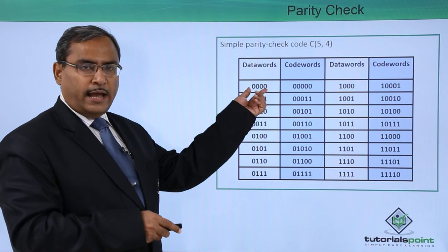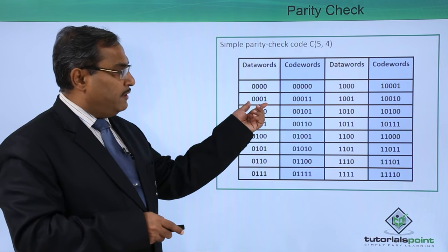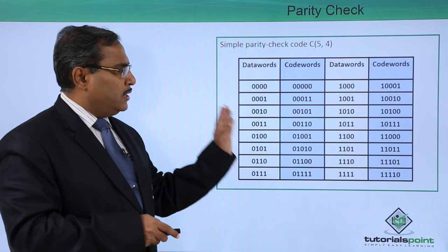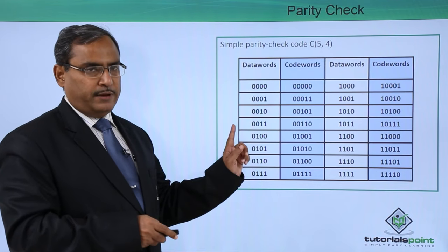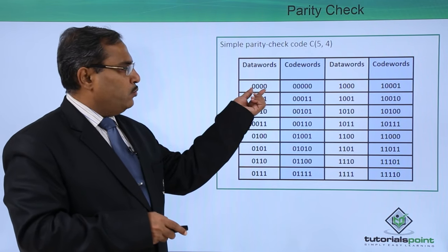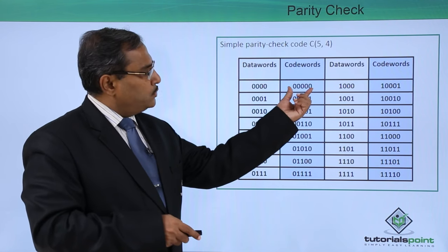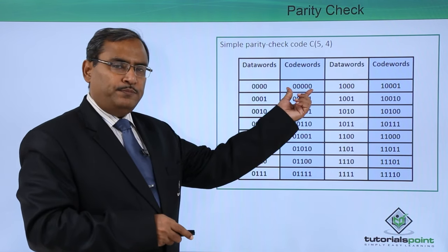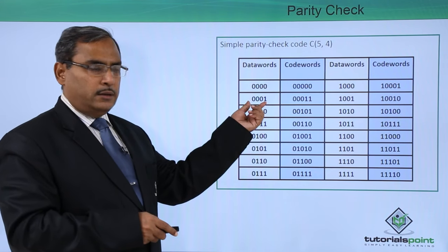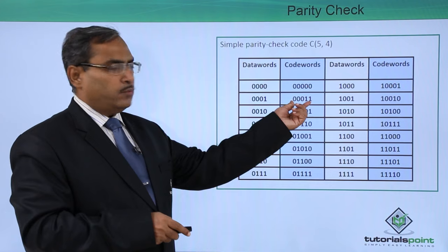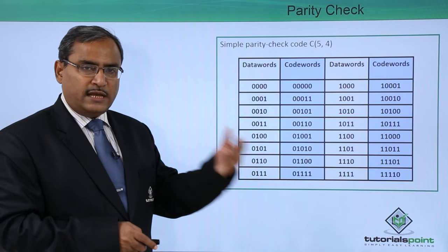Here we have considered even parity. Even parity means the total number of 1s, including in the message and the parity bit, should always be even. So here, how many 1s are there? Zero 1s. So I am adding another 0 as a parity bit, so the total number of 1s remains 0, that is an even number. Here there is only one 1, so I am adding another 1, making the total number of 1s in the message and the parity bit equal to 2, which is an even number.